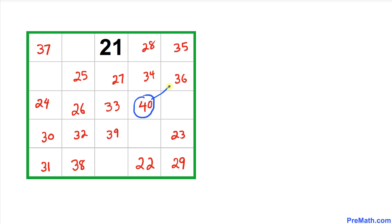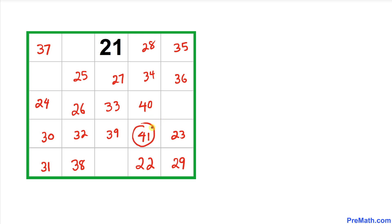From 40 we try to go diagonally but that cell already has a number, so according to the rule we move downward and place 41. From 41 we move diagonally to place 42.